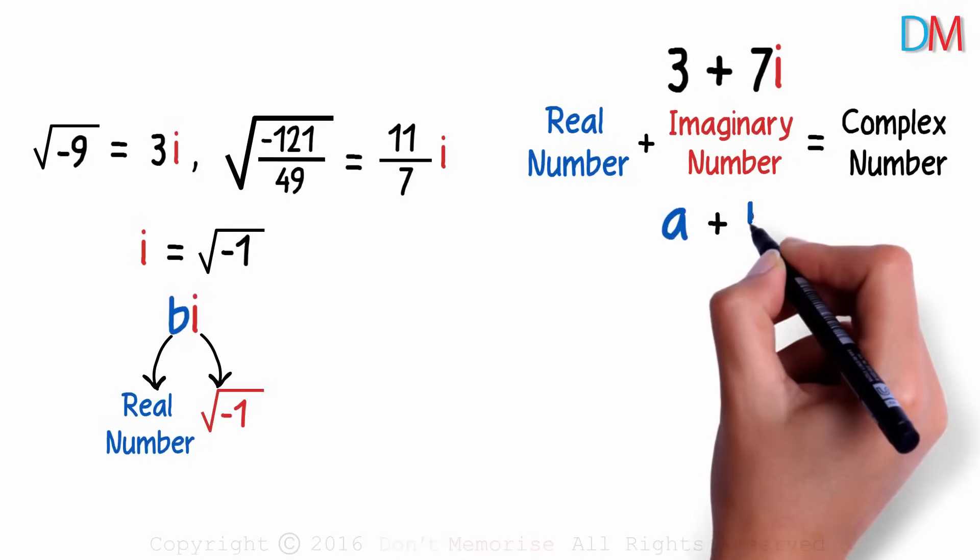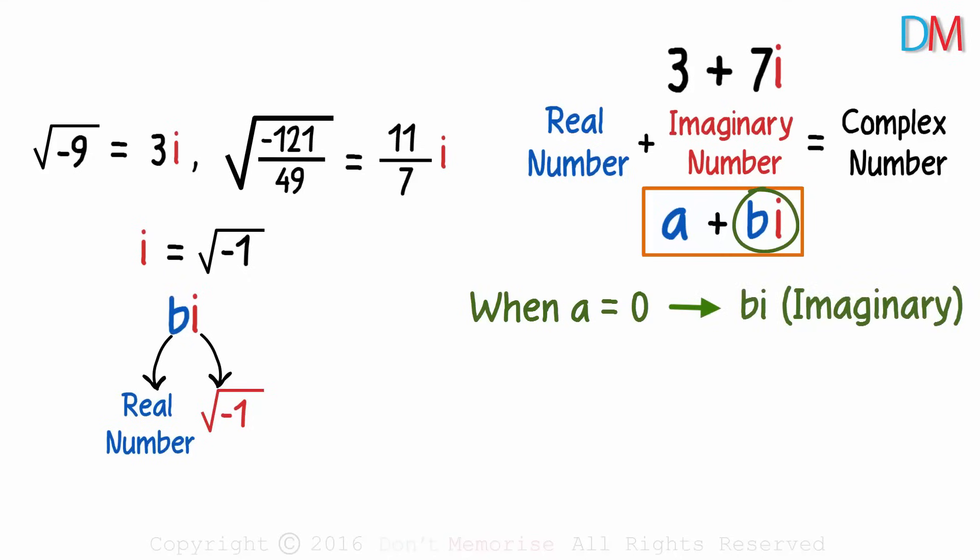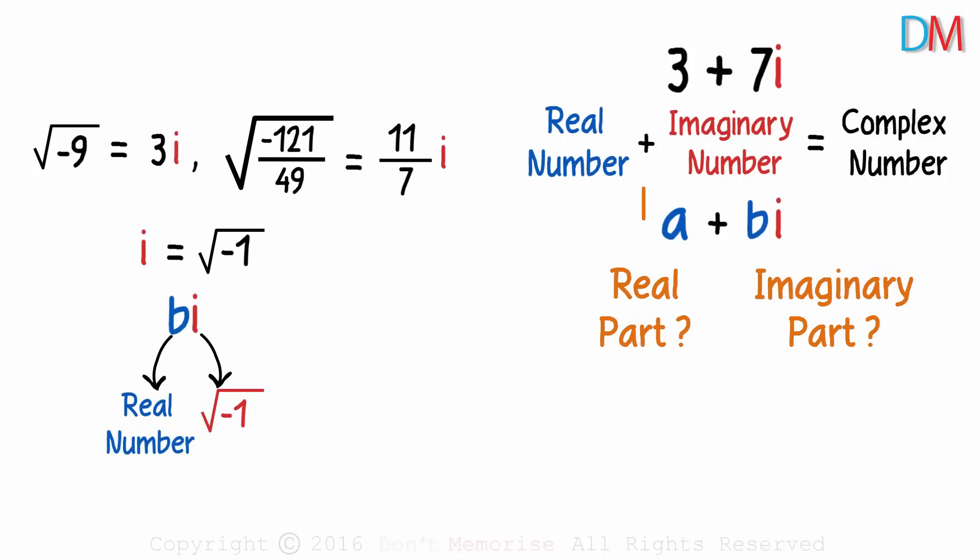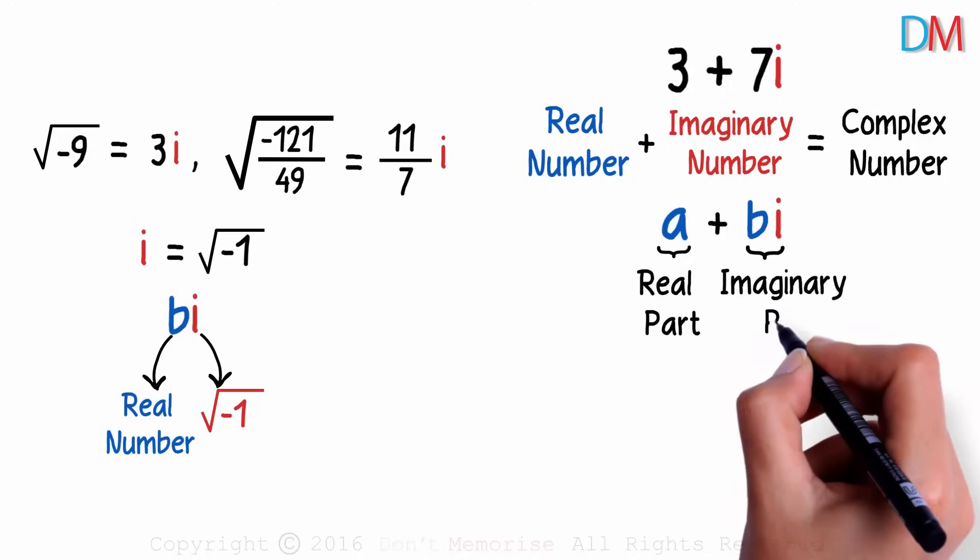It's of the form a plus bi where a and b are real numbers and i is the unit imaginary number. Now let's play around with this basic form. Observe that when a is equal to 0, what is left will be an imaginary number. And when b is equal to 0, we only have a real number. So what are the real and imaginary parts in the basic form of a complex number? A is called the real part and bi is called the imaginary part.